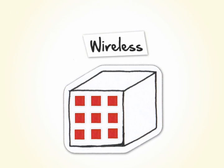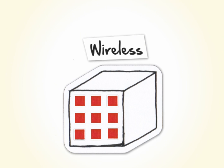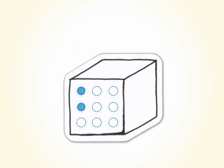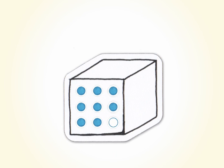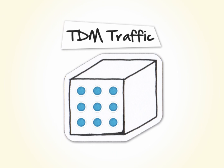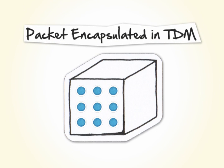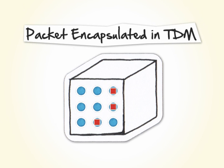With evolution, you get the flexibility to cost-effectively add capacity and services as you need them. Let's say you have TDM voice traffic and everything's running smoothly, but you realize it's time to grow your services. So you decide to add some data traffic — email and internet, for example. Instead of starting from scratch, you simply encapsulate some packet traffic right into your TDM traffic.